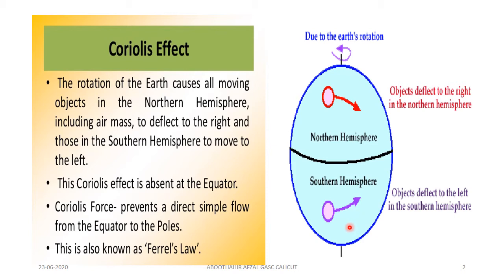At the same time, in the southern hemisphere, if a body is falling towards the earth, that body experiences a Coriolis force towards the left. So this violet color body, which you can see in the southern hemisphere, has an arrow towards the left. As it is in the southern hemisphere, it is deflected towards the left.